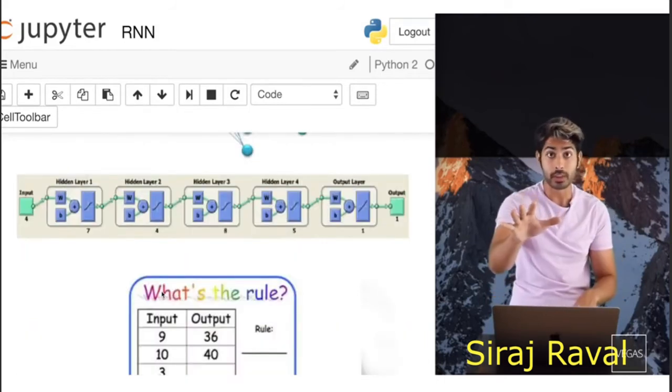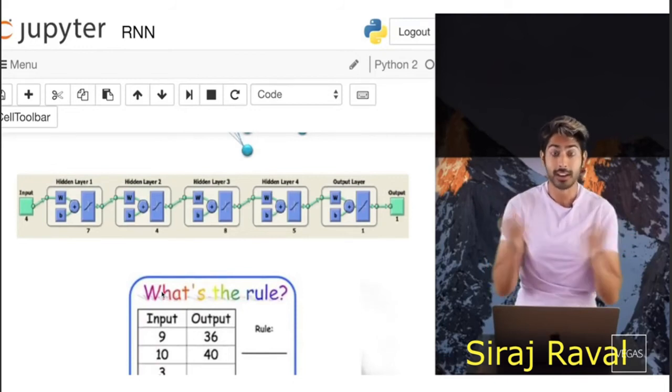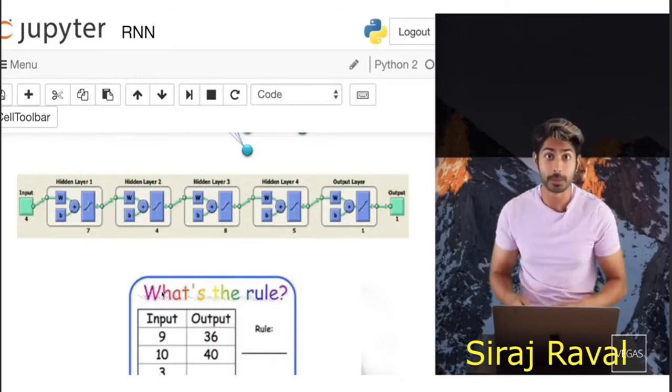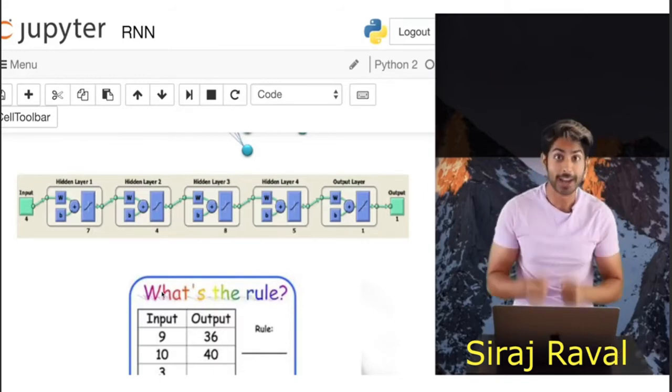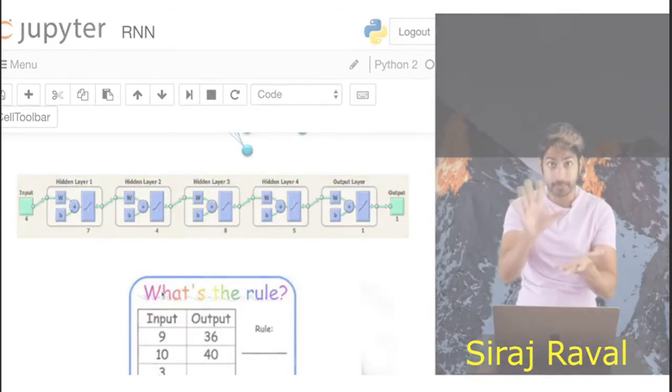Now a great way to remember this whole thing is to just rap about it. So, input, times weight, add a bias, activate, repeat. Here we go, input, sing it with me, times weight, add a bias, activate, repeat. And you just do that for every layer, you just repeat that process.